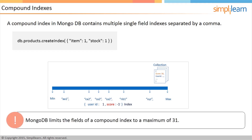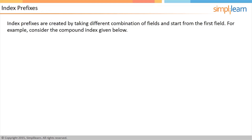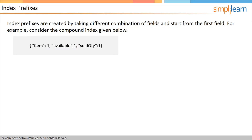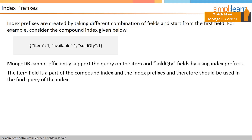The sort order of fields in a compound index is crucial. For a compound index, MongoDB limits the fields to a maximum of 31. Index prefixes are created by taking different combinations of fields, typically starting from the first field. For example, a compound index has item in ascending order and available in ascending order as index prefixes. MongoDB uses these indexes for querying the item field, the available field, and the sold quantity field. MongoDB cannot efficiently support a query on the item and sold quantity fields together using index prefixes, as it would be like using separate indexes. Since the item field is part of the compound index and index prefixes, it should be used in the find query.